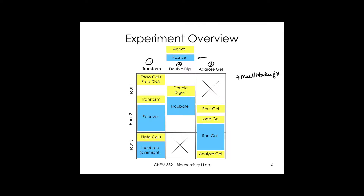This lab is all about multitasking. Consider the example of a Thanksgiving dinner — nobody just makes the turkey and thinks about nothing else. You coordinate what time each dish needs to start so that at five o'clock everything is ready at the same time. The same is true with our experiments. As we go through this pre-lab, there will be questions you need to answer for your written pre-lab submitted on Blackboard.